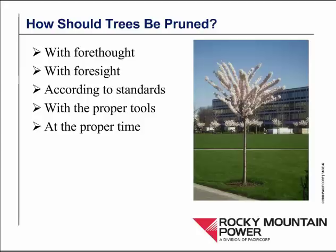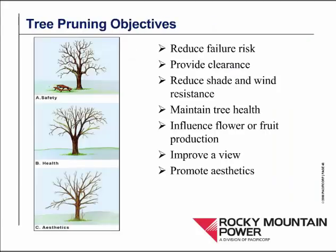Trees should be pruned with the idea that they're going to be something else in the future — at least young and moderate trees should be. So we need forethought and foresight. We need to do it according to the ANSI A300 standard and the best management practices of the International Society of Arboriculture, with proper tools, at the proper time. Pruning should have some objectives — ANSI A300 and the ISA best management practices tell us that the objectives of pruning could be to reduce the risk of failure, to provide clearance over things with which the tree is interfering, to reduce shade and wind resistance, to maintain tree health, to influence flower or fruit production, to improve a view, or to promote aesthetics.